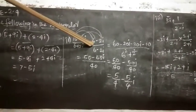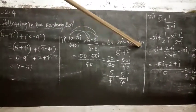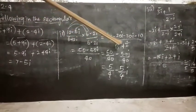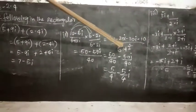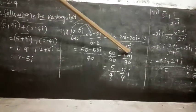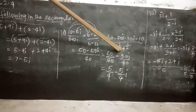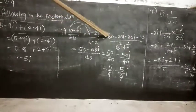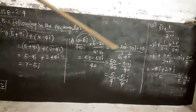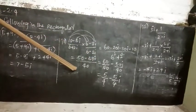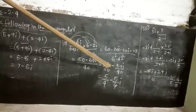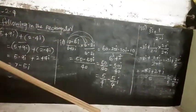So minus 5i into minus 2i means plus 10i squared, and i squared means minus 10. The denominator uses a plus b into a minus b equals a squared plus b squared (since i squared is minus 1). So denominator is 6 squared plus 2 squared equals 40. Numerator: 60 minus 10 is 50, and minus 20i minus 30i is minus 50i. Result: 50 by 40 minus 50i by 40, which simplifies to 5/4 minus 5/4 i.